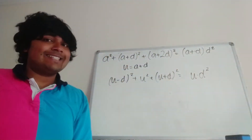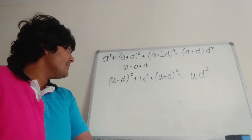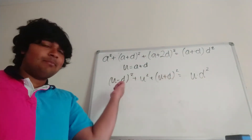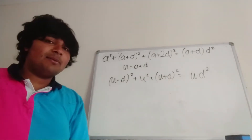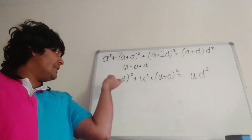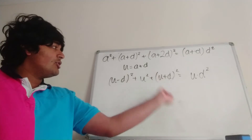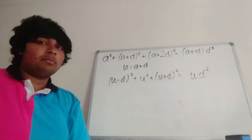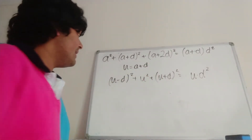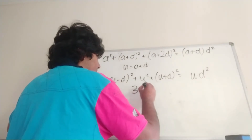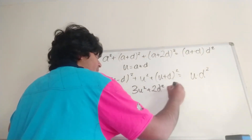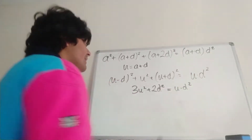I can expand the left-hand side. From (u minus d) squared and (u plus d) squared, I get a minus 2ud from one term and a plus 2ud from the other, so they cancel. I'm left with u squared plus d squared, u squared plus d squared, plus u squared — that's 3u squared and 2d squared. So 3u squared plus 2d squared equals u times d squared.